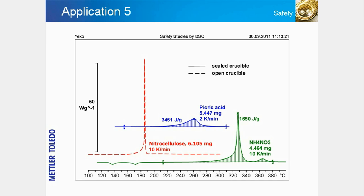Chemical substances that contain one or more nitro groups are well known for their explosive potential. Some of these products, for example picric acid and trinitrophenol, are starting materials for chemical syntheses or are used for analytical purposes. Others find use as propellants or explosives, for example nitrocellulose or ammonium nitrate — the latter as fertilizer has already been the cause of several very serious explosions. The slide shows DSC measurements of three of these thermally hazardous substances.